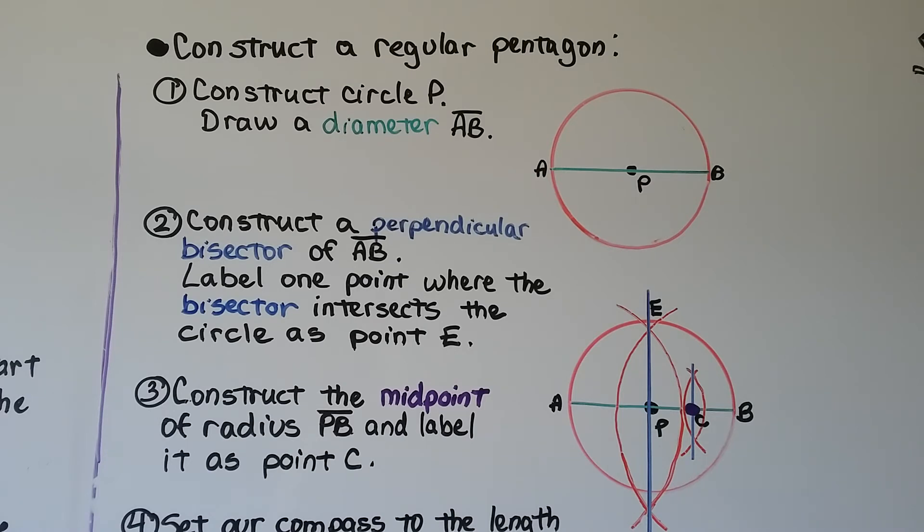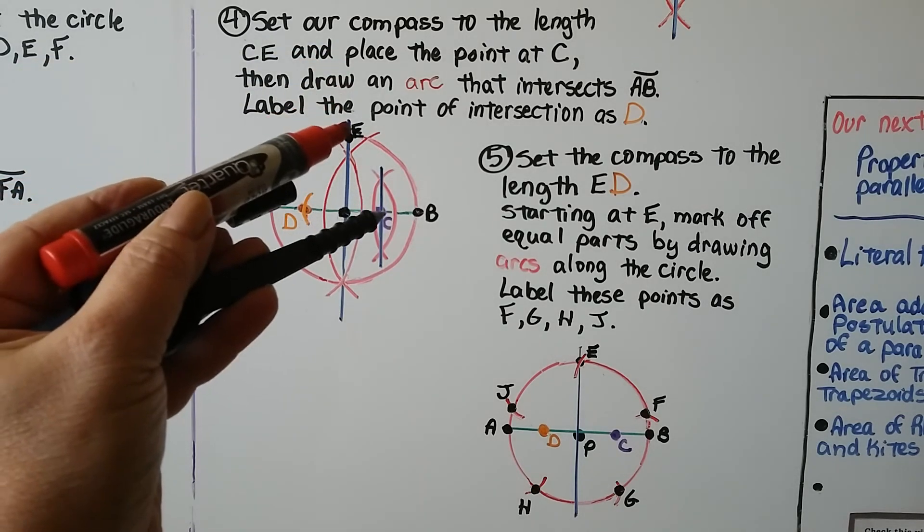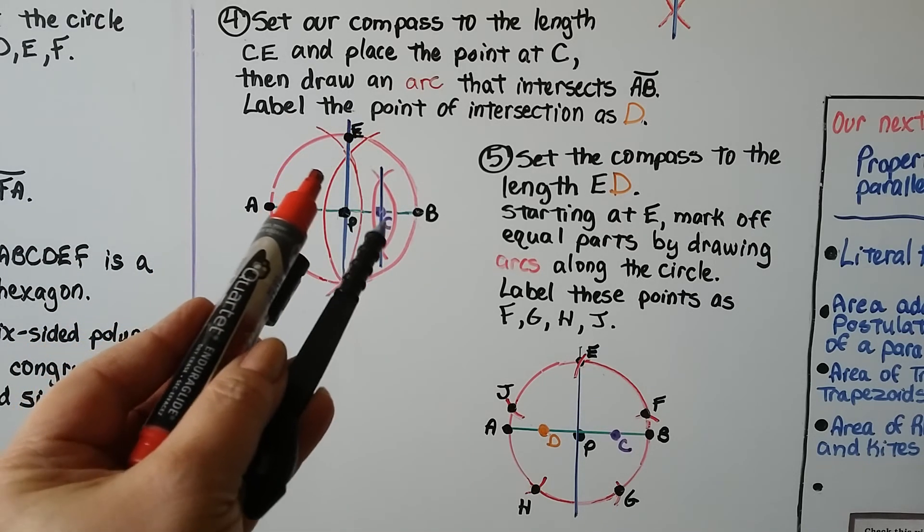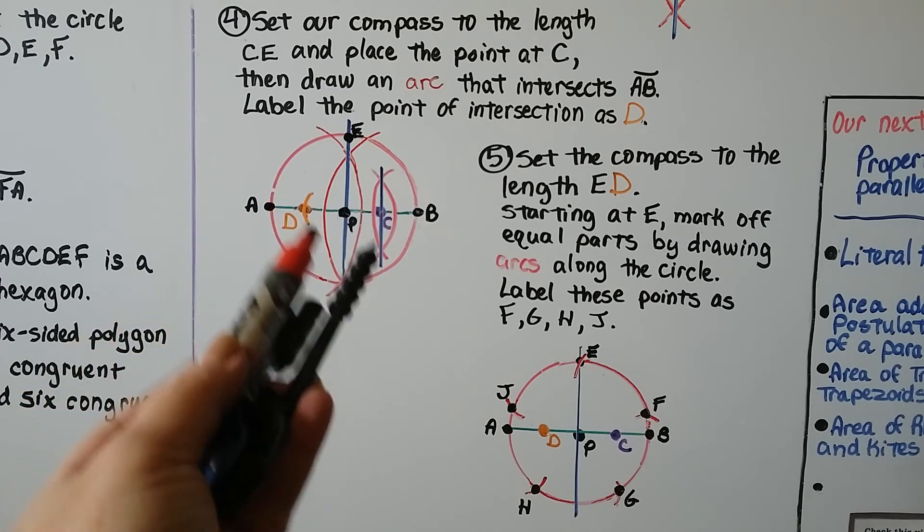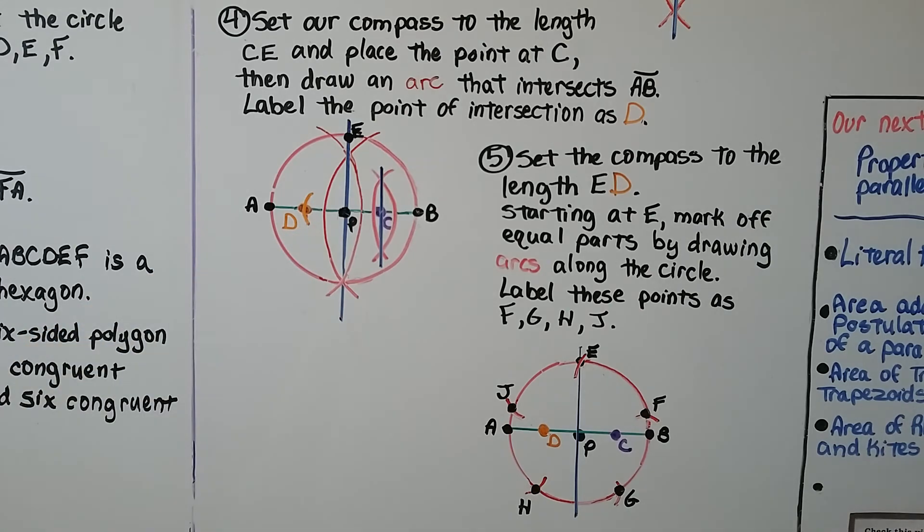The next thing we're going to do is find the midpoint of PB. We put our compass on P and make a little arc, put it on B with the same setting and make a little arc, just like we did with the perpendicular bisector. We draw a line through those two intersections and can label that C. Now we set our compass to the length CE, this length right here, and we place the point of our compass at C, and we draw an arc that intersects segment AB. That'll be right there. We can label that D.